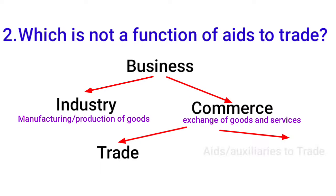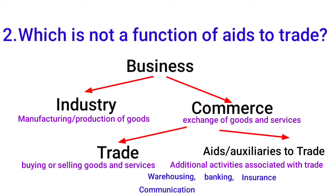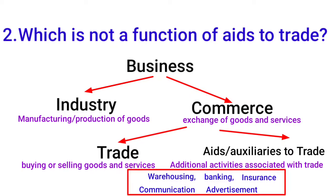Aids to trade are the auxiliaries that support trade — activities happening in the background of business. For example, warehousing to store products, banking, insurance, communications, and advertising. These background activities that support trade are called aids to trade.